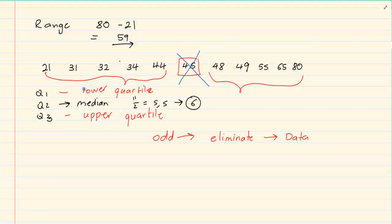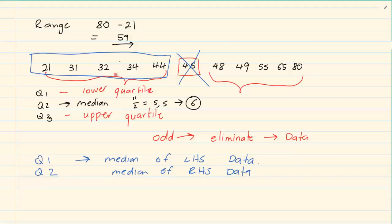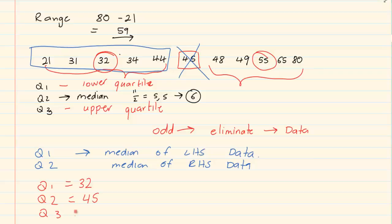We have taken out 45. To get Q1, it is like getting the median of the remaining data on the left-hand side. We have 5 terms on the left: 5 divided by 2 is 2.5, rounded up to 3rd term, so Q1 is 32. For Q3, the right-hand side also has 5 terms: 5 divided by 2 is 2.5, rounded up to 3rd term, so Q3 is 55. Therefore Q1 = 32, Q2 = 45, and Q3 = 55.